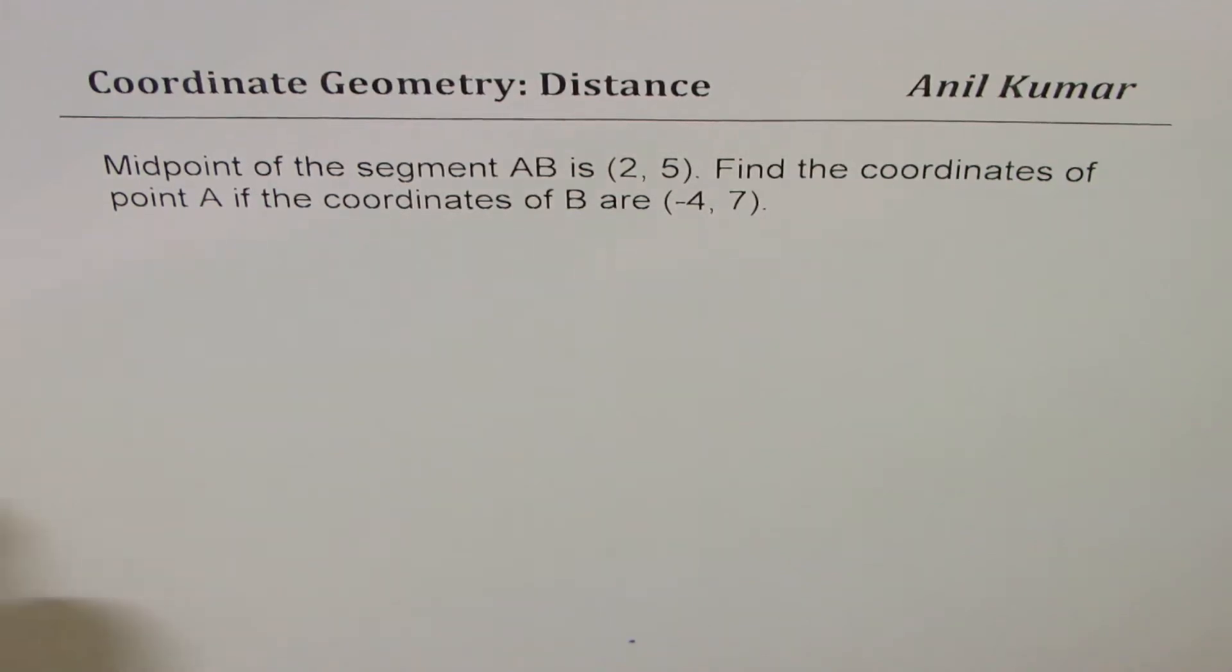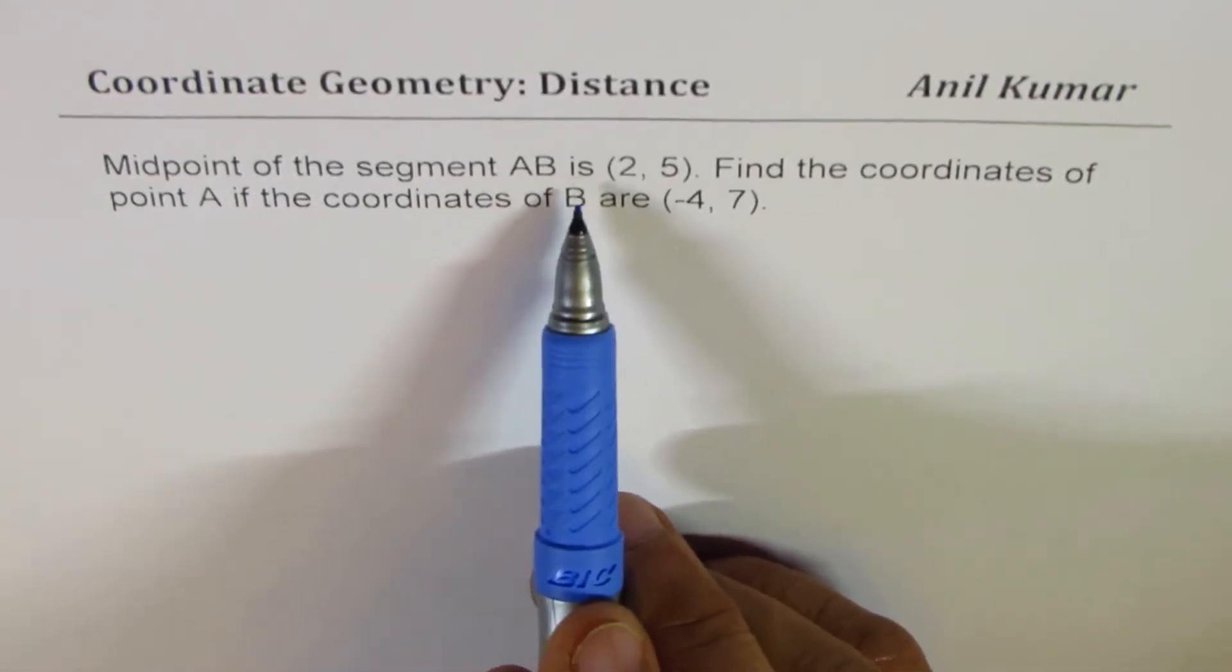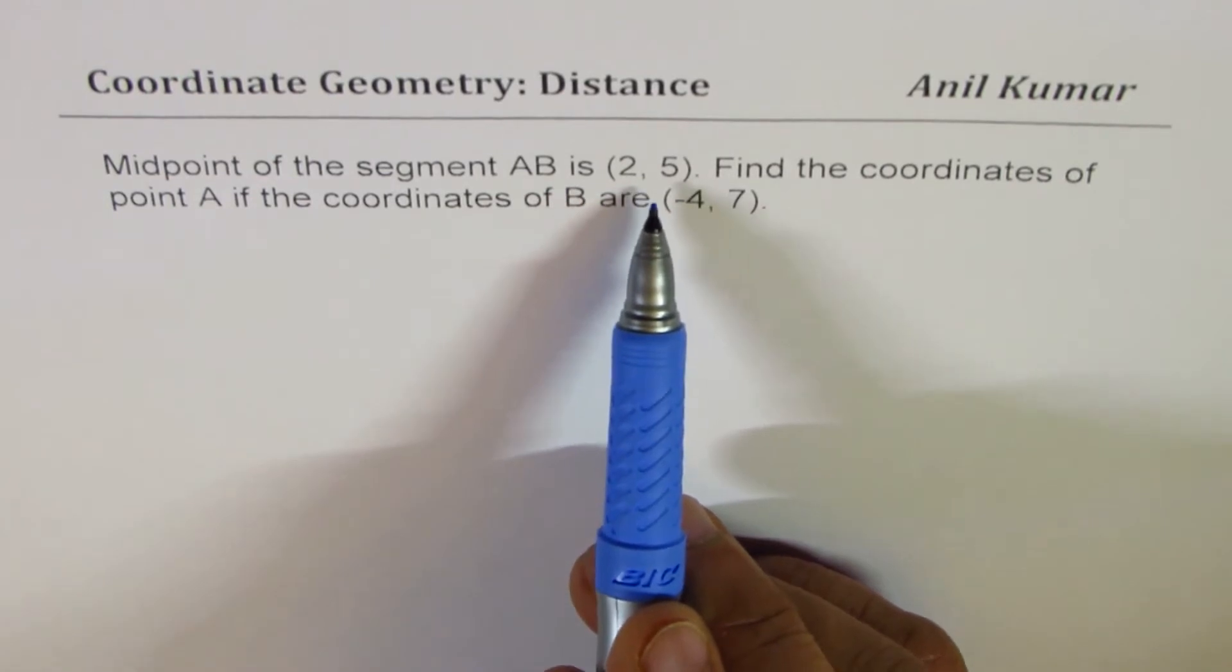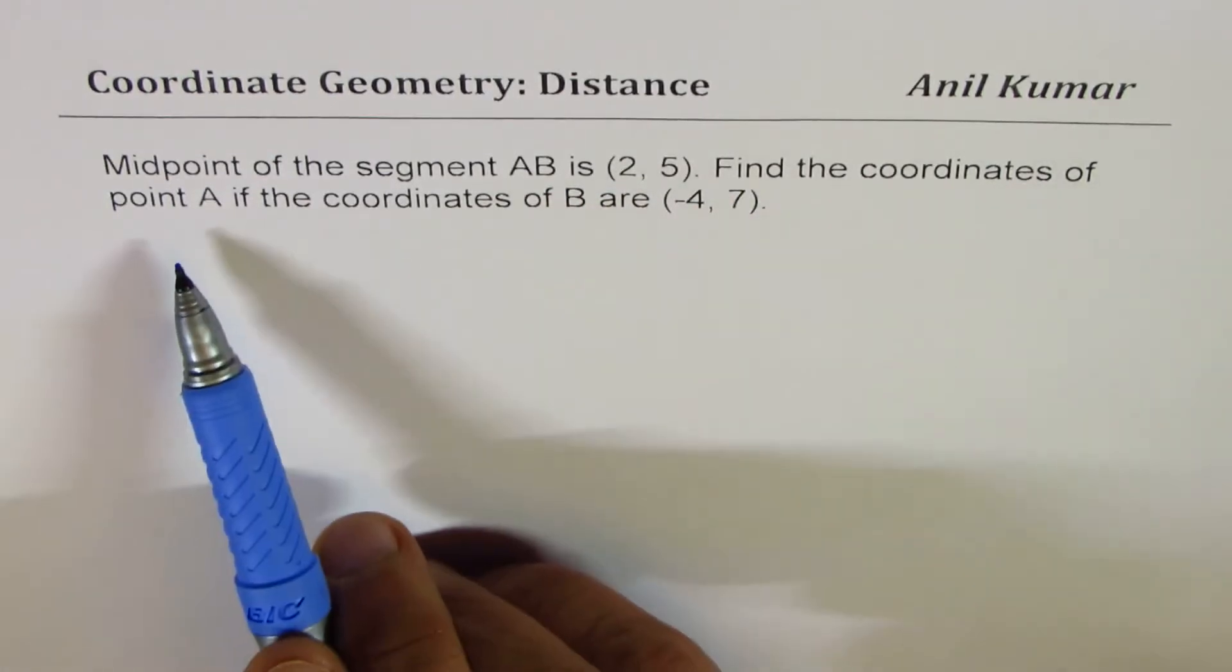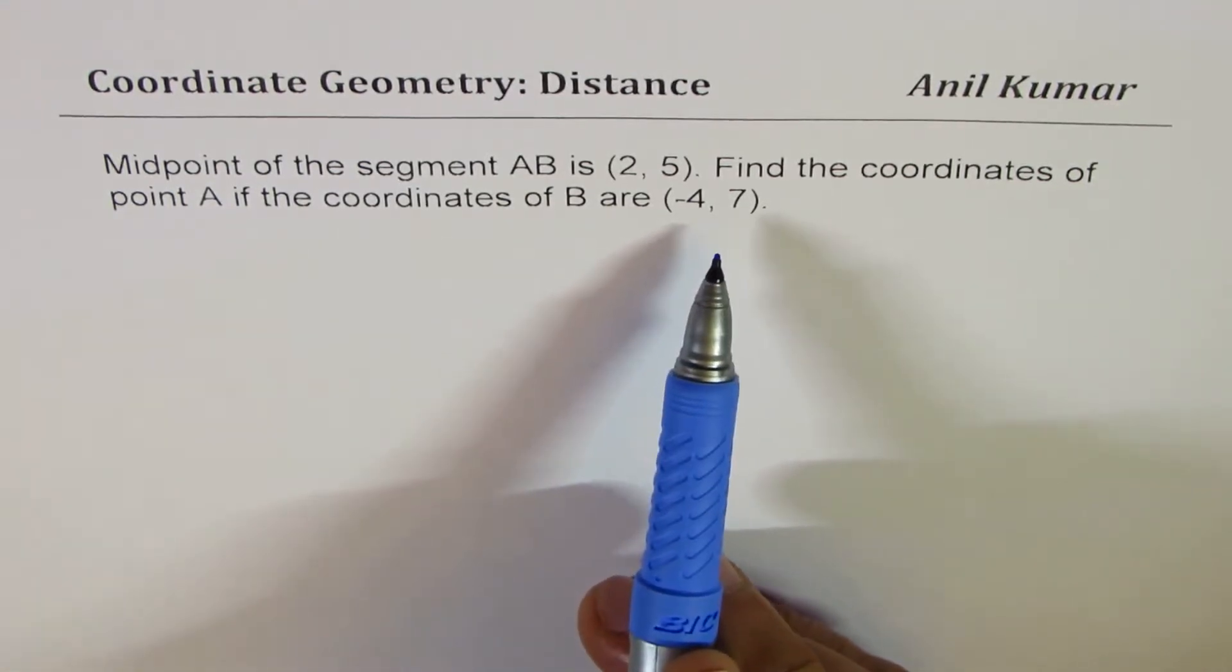I'm Anil Kumar sharing with you a test question on coordinate geometry. The question here is: midpoint of the segment AB is (2, 5). Find the coordinates of point A if the coordinates of B are (-4, 7).